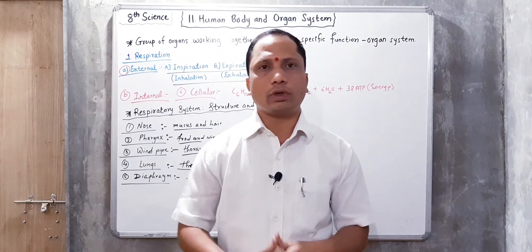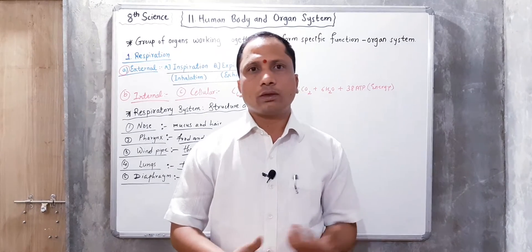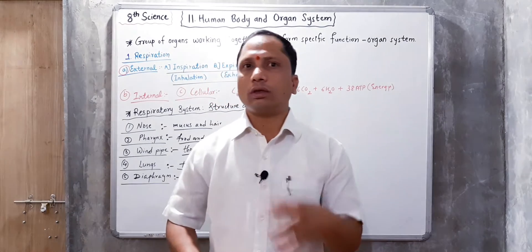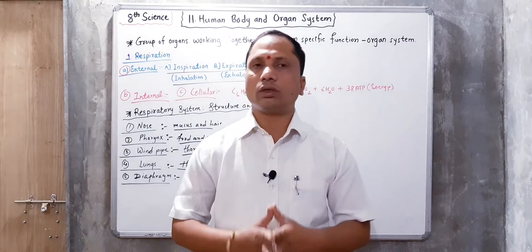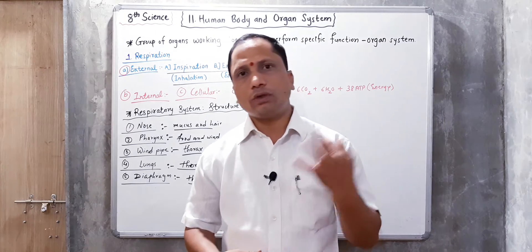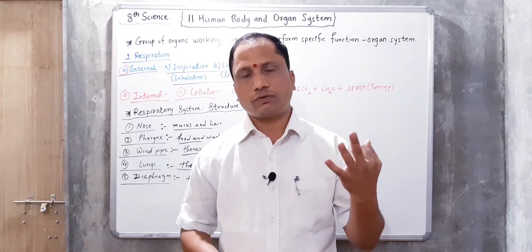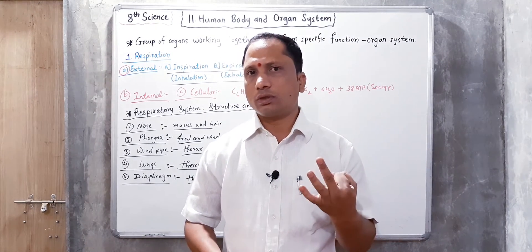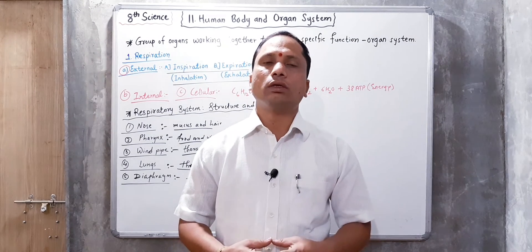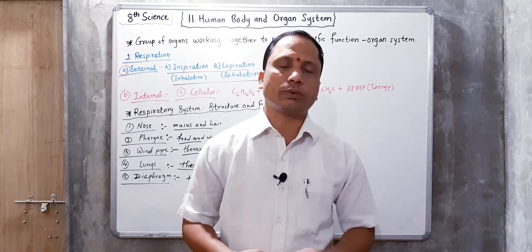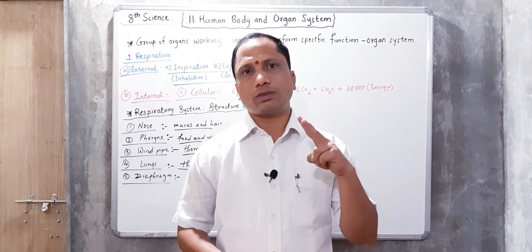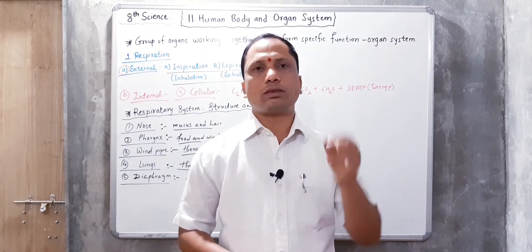Now we are going to discuss the respiratory system — what is respiration. Respiration has three parts: first is external respiration, second is internal respiration, and third is cellular respiration. External respiration has two sub-parts: inspiration or inhalation, and expiration or exhalation.